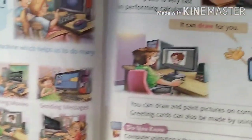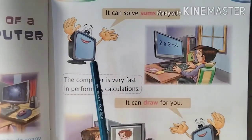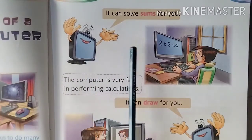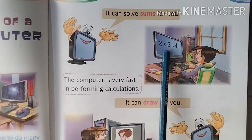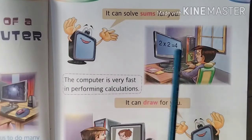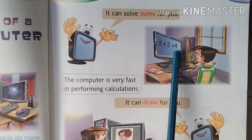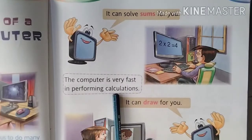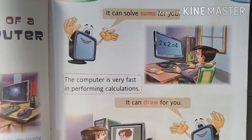Come to next page, page number 15. What can a computer do for us? It can solve sums for you. You can see in the pictures that 2 multiplied by 2 is equal to 4. We can solve sums with the help of a computer. The computer is very fast in performing calculations — it is a smart electronic machine and it can do calculations very fast.